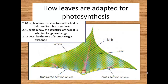In this video we are going to be thinking about how leaves are adapted for photosynthesis. The first thing to think about with a leaf is its overall shape — it is wide and thin, meaning that it has a really large surface area to volume ratio. That is going to be extremely important for absorbing all the carbon dioxide it needs for photosynthesis and for absorbing as much light energy as possible.